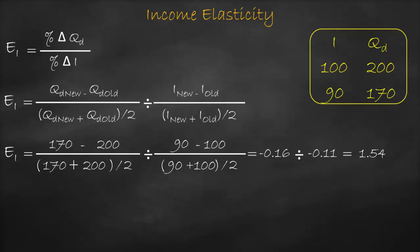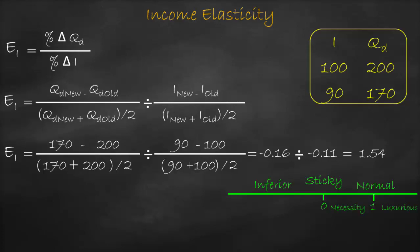Our benchmark for income elasticity is zero: if equal to zero, it's a sticky good; bigger than zero, normal good; lower than zero, inferior good. For a normal good, it can be classified as necessity or luxurious — between 0 and 1 is necessity, bigger than 1 is luxurious. Income elasticity equals 1.54 — it's bigger than zero, therefore it's a normal good, and since 1.54 is also bigger than 1, it is a luxurious good.